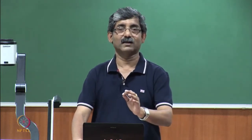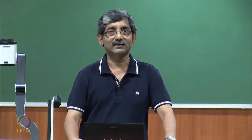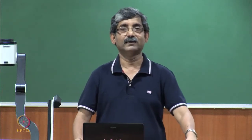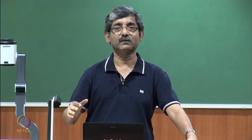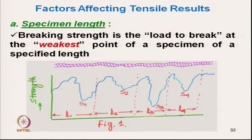The first factor we discussed earlier was specimen length. Specimen length directly affects the tensile result — for the same yarn, if we increase the specimen length, the apparent tensile strength becomes lower. The basic reason is the weak link theory: any material breaks at its weakest point. If we keep increasing the test length, the weakest point will be reached.